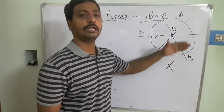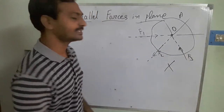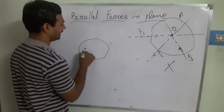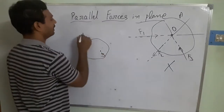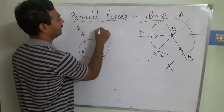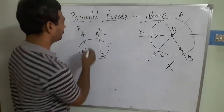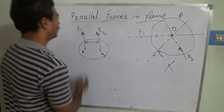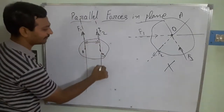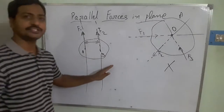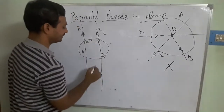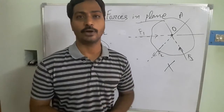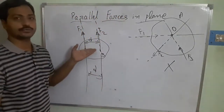So what are parallel forces? Suppose you take any kind of body — one force is acting at point A and another force is acting at point B. The distance between F1 and F2 always remains constant. When you extend their lines of action, they are not going to intersect each other but maintain the same distance. A good example is railway tracks — they are parallel and never intersect.